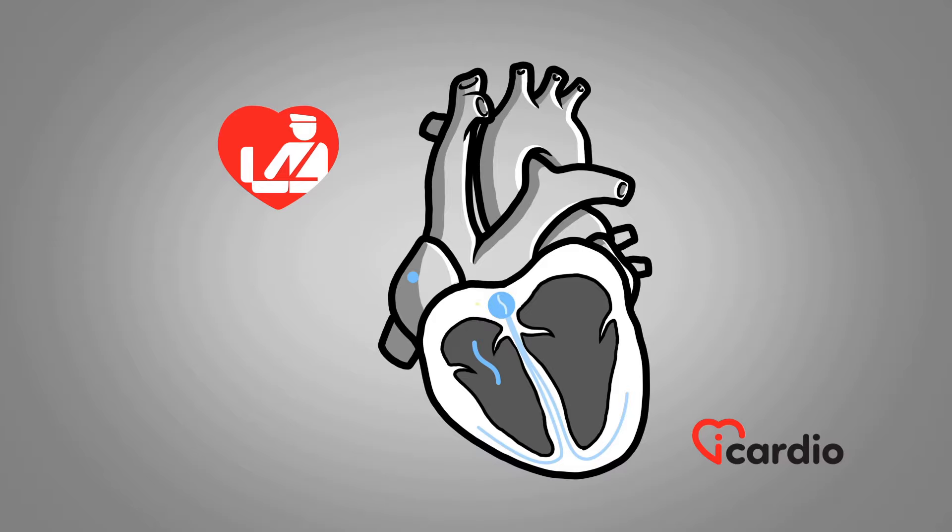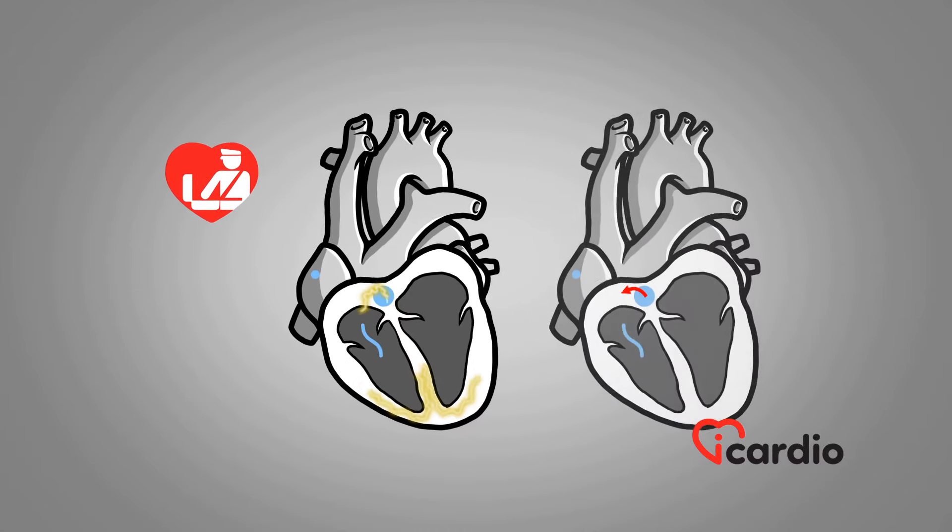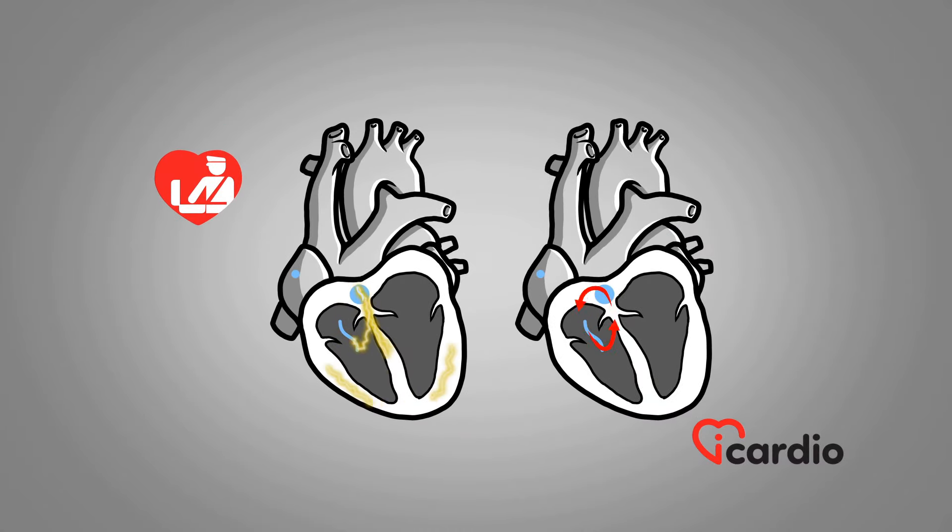However, extrasystoles can trigger SVT through the accessory pathway. The activity descends through the AV node and moves back up through the accessory pathway, ready to descend again toward the ventricles by way of the AV node. The electrical loop has been created and triggers SVT. This loop can also move in the opposite direction.